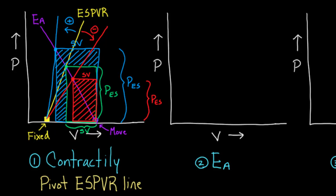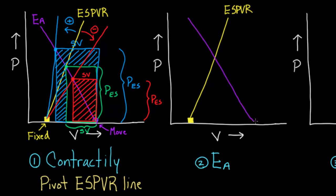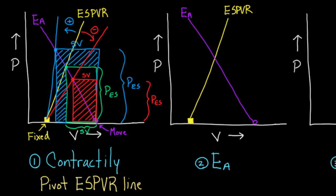Let's move on to arterial elastance. I'm going to draw the same setup — cinder block, ESPVR line, and a purple EA line with a little wheel at the bottom. Again, I'm not going to move the wheel, but remember it could be moved. What we're going to do instead is change arterial elastance, and what that does is pivot the EA line — so just as contractility pivoted the ESPVR line, changing arterial elastance pivots the arterial elastance line.